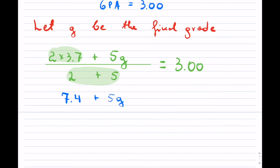So 2 times 3.7 is 7.4. Okay, so that will be on top. And in the denominator, I have 2 plus 5, which is just 7. Okay, and on the right-hand side, I'm going to drop those zeros there. So it's just 3.